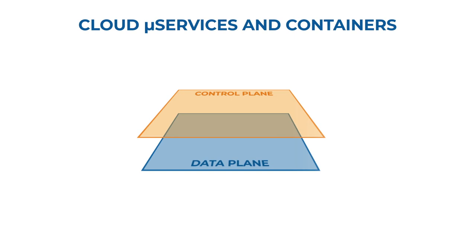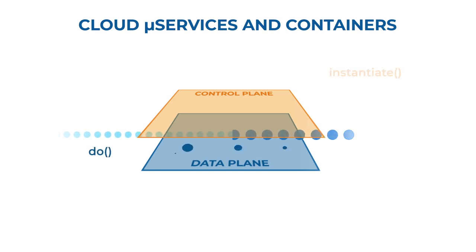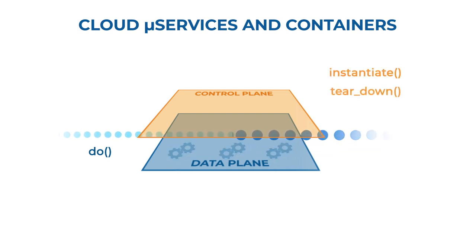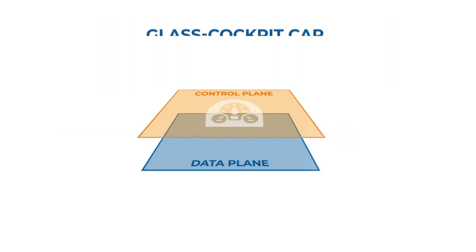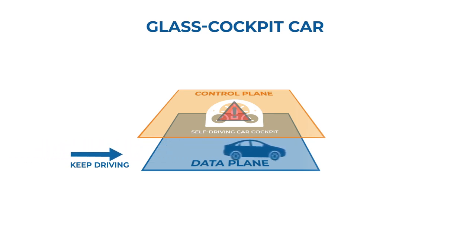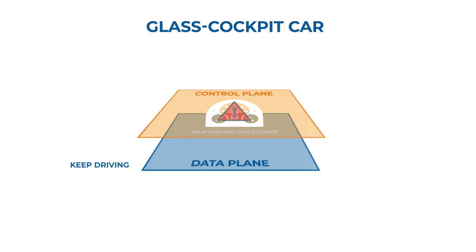The distinction continues for microservices and containers. The control plane instantiates a microservice in the data plane and eventually tears it down. You can even see this approach in self-driving cars: if the cockpit crashes, the data plane functionality keeps the car safely on the road and guides it to safety.